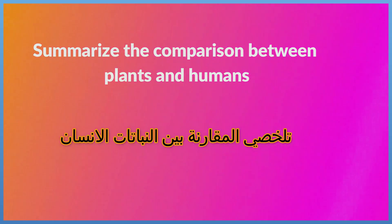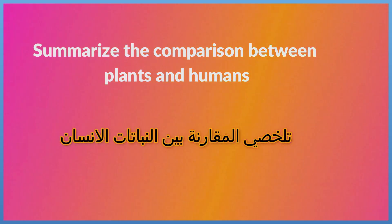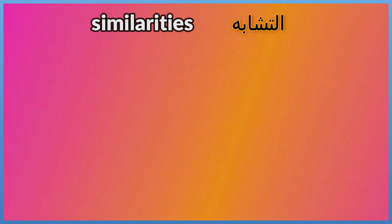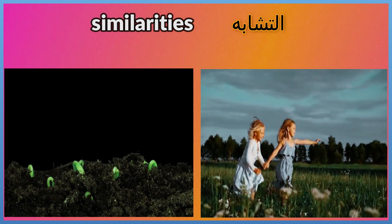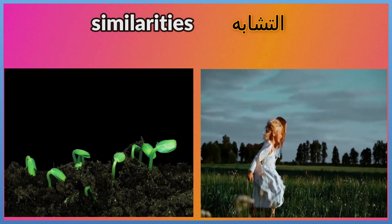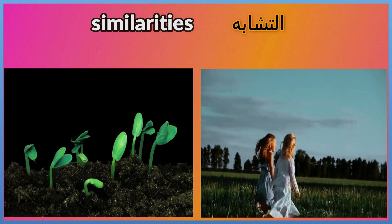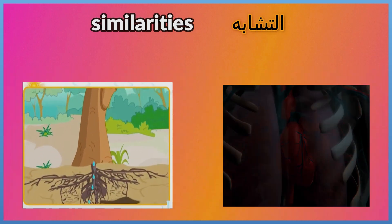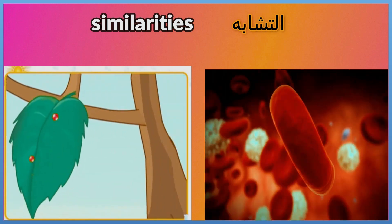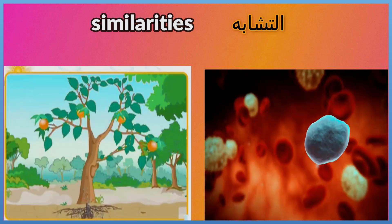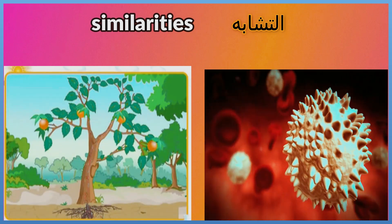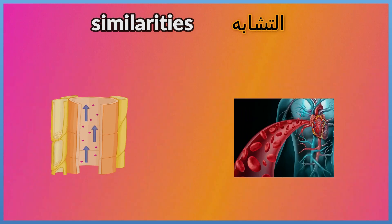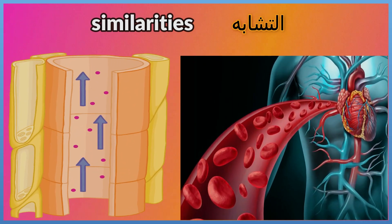Summarizing the comparison between plants and humans — Similarities: Both plants and humans need energy and gases from the air to survive and grow. Both have systems of vessels to transport water, nutrients, and gases. Both have one-way vessels and tubes.